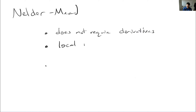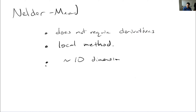Nelder-Mead is a local method — not global. It's going to exploit and try to find an optimum quickly rather than being exploratory. As a rule of thumb, about 10 dimensions is about as high as you want to go. It's effective if the problem size is small; as it gets larger, the method can be a real challenge. It tends to struggle with higher dimensions even more so than some other gradient-free methods.